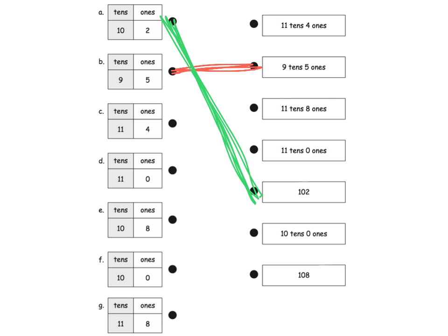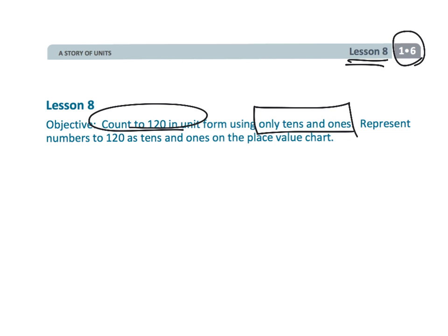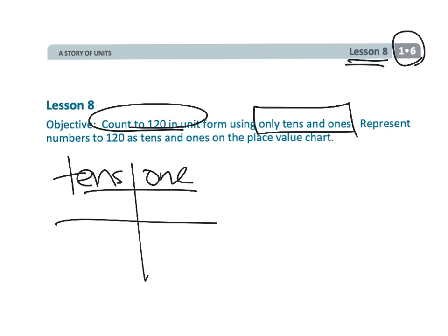A tricky one might be 11 tens and 4 ones. So 11 tens, 4 ones — it's right here. 11 tens, 4 ones — we can connect that right there. I'm going to leave the rest of this for you parents and teachers to work with your kids. That wraps up first grade module 6, lesson 8. The idea is we're counting, but we're talking about 10s and 1s, with that key idea knowing that 10 tens is equal to 100. Thank you.